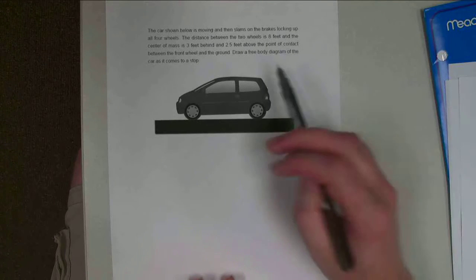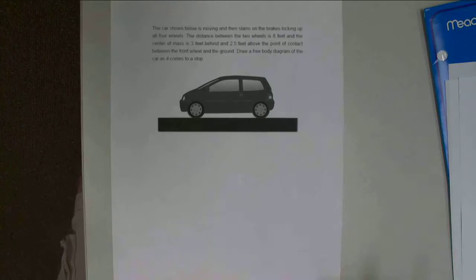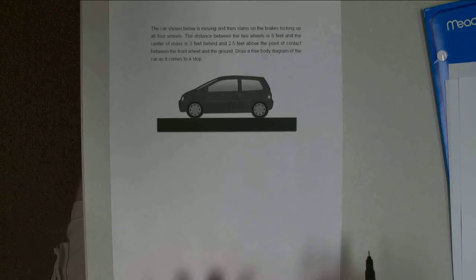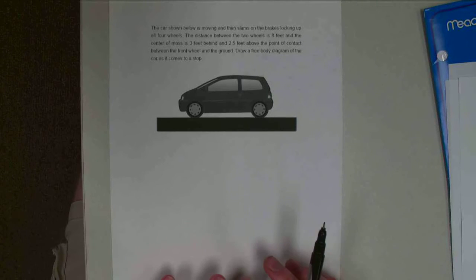So we want to draw a free body diagram of this car as it comes to a stop. Step one is to separate the car, which is our body, from everything else. The only other object in this scenario is going to be the ground.